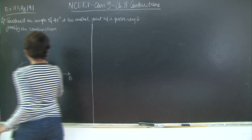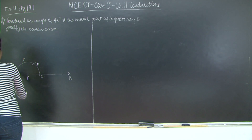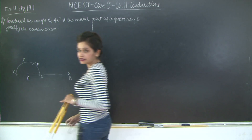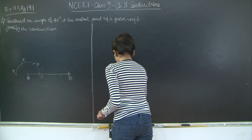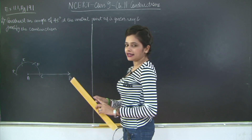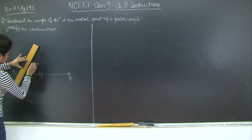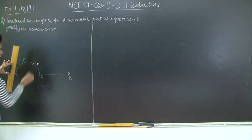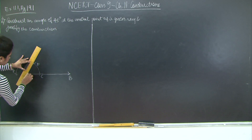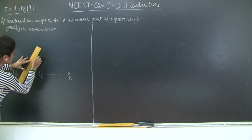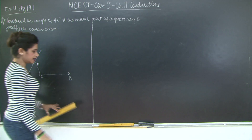Let us call the points of intersection of the arcs as D, E and F. So once you are done with this, I will join A and D. It is a very good practice to first mark your point and then connect two points using a line. So I have drawn this ray AD.